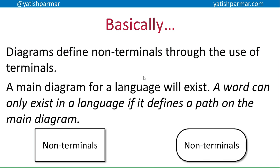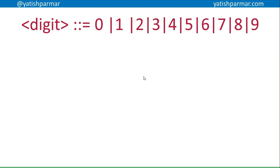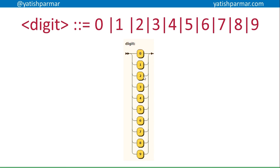Non-terminals are defined in rectangles and terminals are defined in rounded rectangles. So here I might have a rule in BNF where a digit is defined by the terminals 0, 1, 2, 3, 4, 5, 6, 7, 8, 9. That would look like this in a syntax diagram.